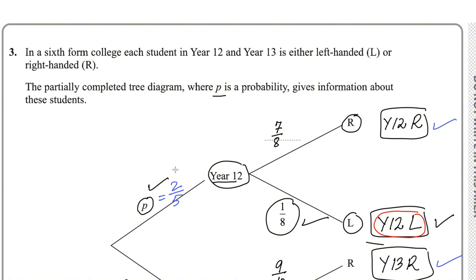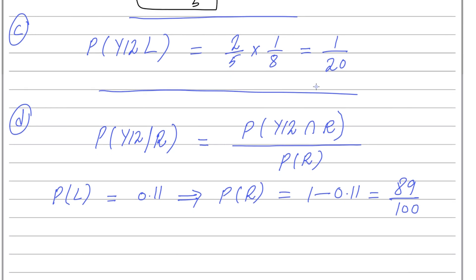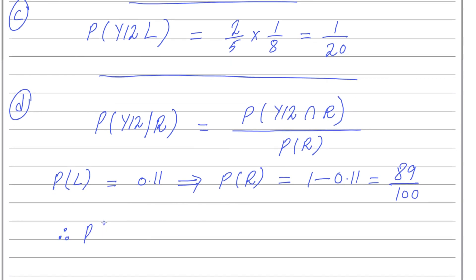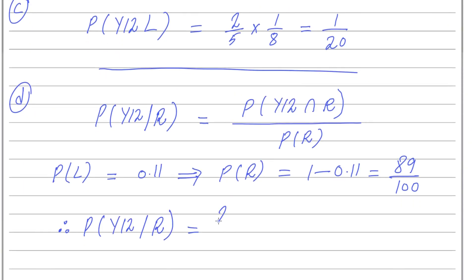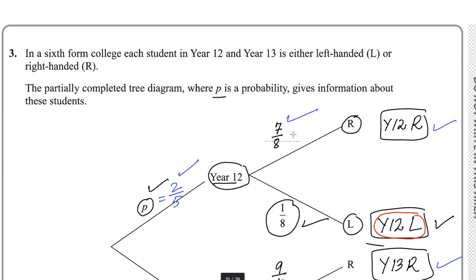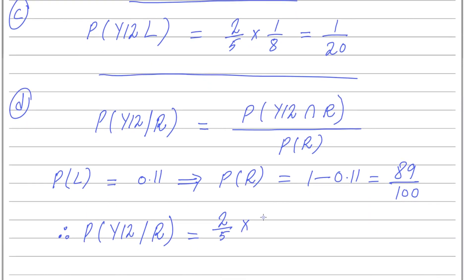Year 12 right-handed is the outcome we need in the numerator. So P(Year 12 | right-handed) = P(Year 12) × P(right-handed | Year 12) ÷ P(right-handed) = (2/5 × 7/8) ÷ (89/100).